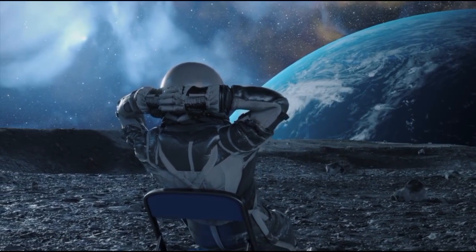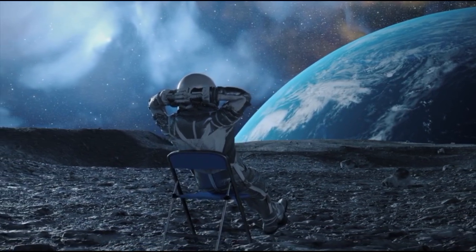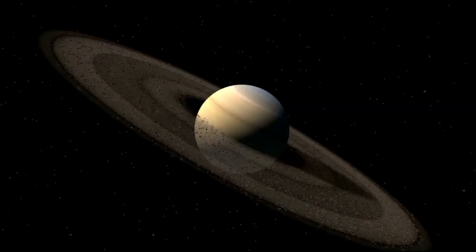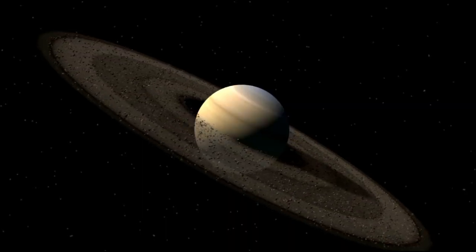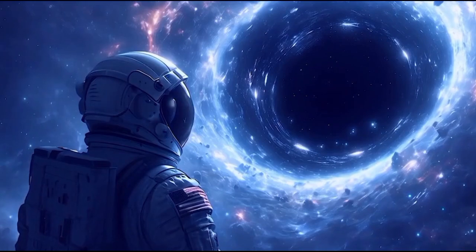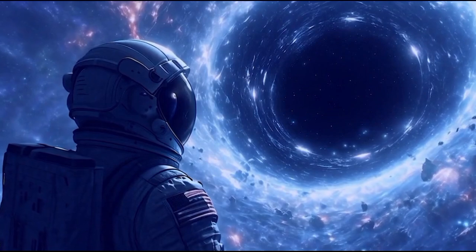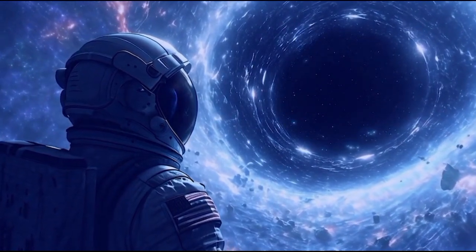For starters, it is located in our cosmic neighborhood, just 4.2 light-years away. To put this in perspective, if you could travel at the speed of light, you'd reach Proxima b in just over four years, the same amount of time it takes for a presidential term to conclude or for your favorite TV show to become outdated.